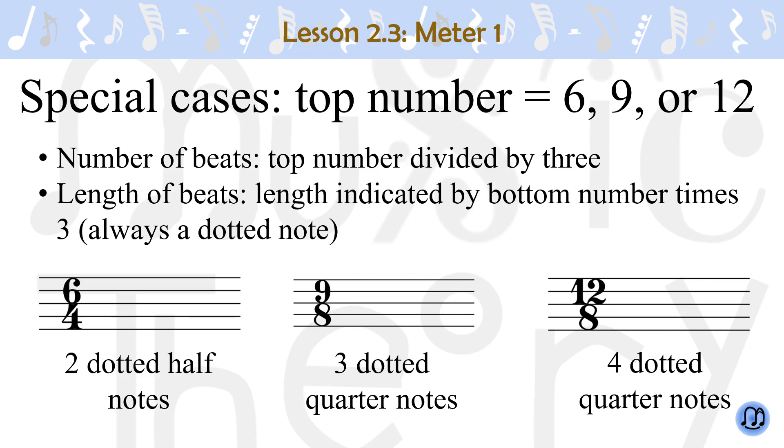For example, in 6-4, the top number is 6, so there are 6 divided by 3, which equals 2 beats. The bottom number is a 4, which means a quarter note. So multiply a quarter note by 3 to get a dotted half note, which is the length of a beat. The rest of them are the same.